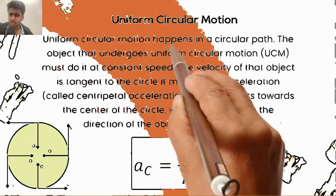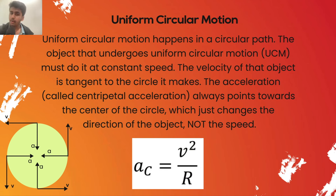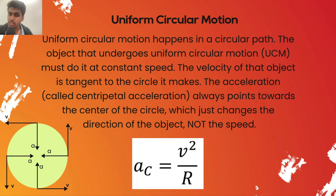So, what is Uniform Circular Motion? By the name, you can probably tell that this motion happens in a circular path. The object that undergoes UCM, which is Uniform Circular Motion, must do it at constant speed. The velocity of that object will be tangent to the circle that it makes, as you can see in this diagram below in the bottom left. The acceleration is known as centripetal acceleration, and it points towards the center of the circle.